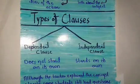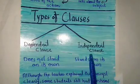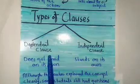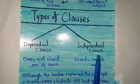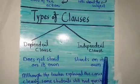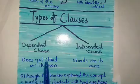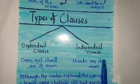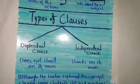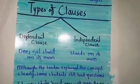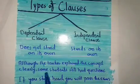There are two types of clauses: dependent clause and independent clause. A dependent clause always needs the help of an independent clause, whereas an independent clause does not need help from another clause. A dependent clause does not stand on its own, whereas an independent clause stands on its own.